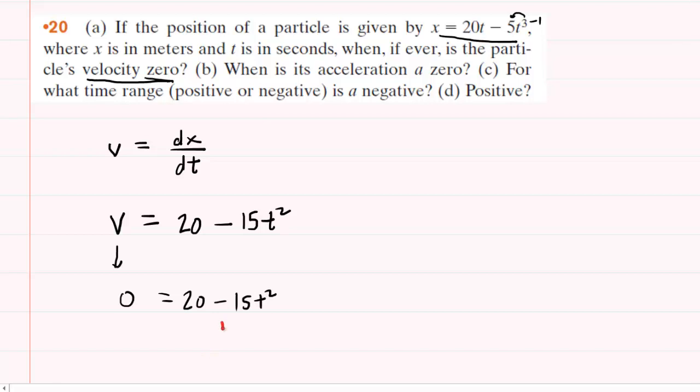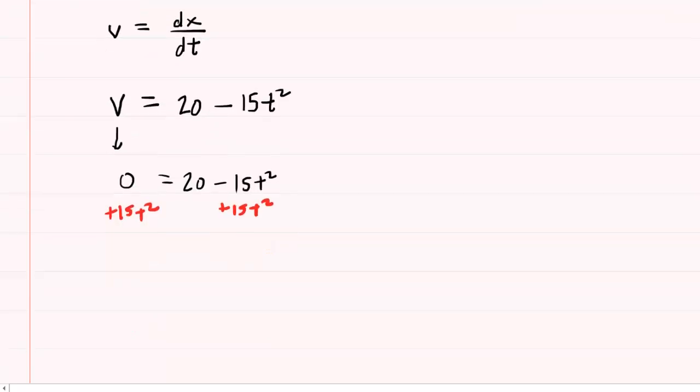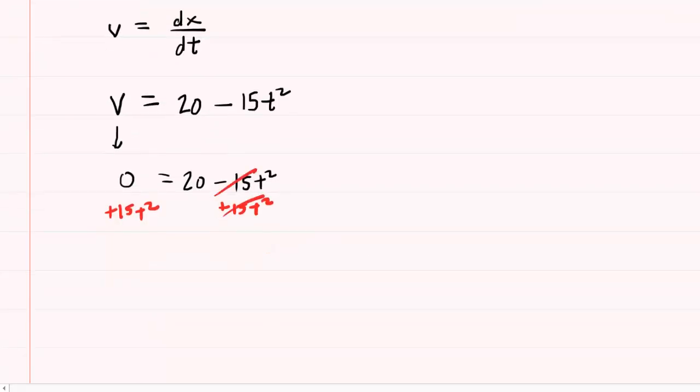And to do that we can add 15t squared to both sides of this equation. These cancel out on the right-hand side, so now we have 15t squared equals 20.